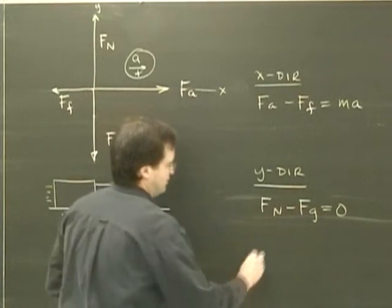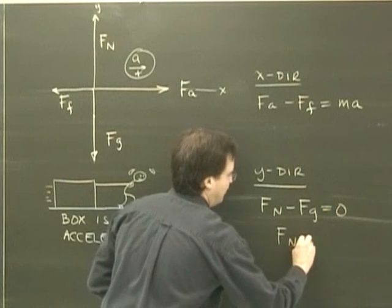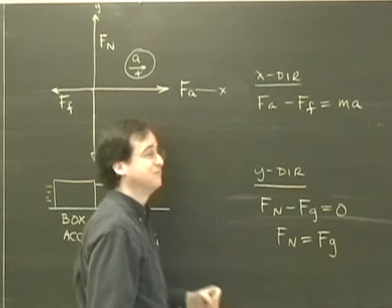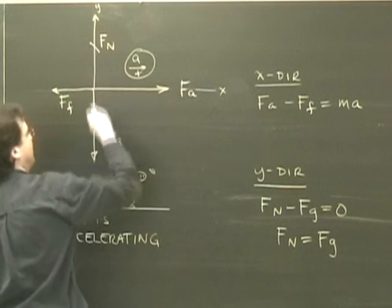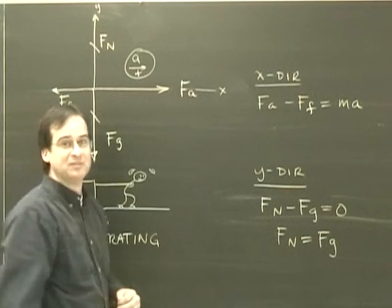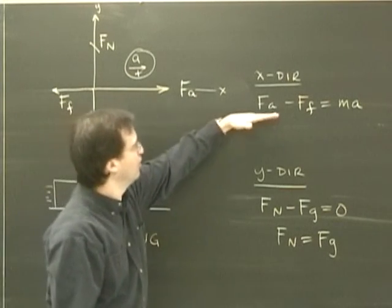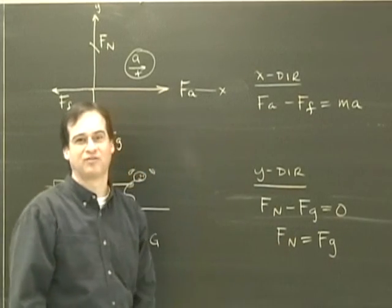So if I look at this, I can quickly see that F_N must be equal to F_g. So I'm going to go over here and indicate that on my diagram. So now I've analyzed Newton's second law in the x-direction and in the y-direction and here's what I've got.